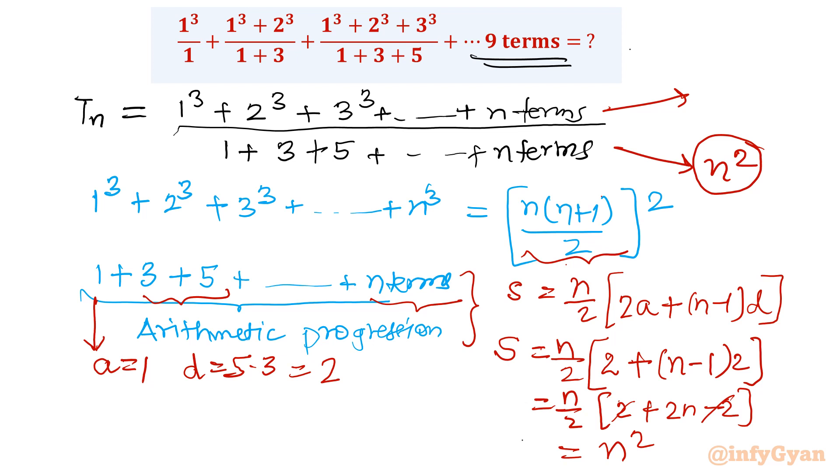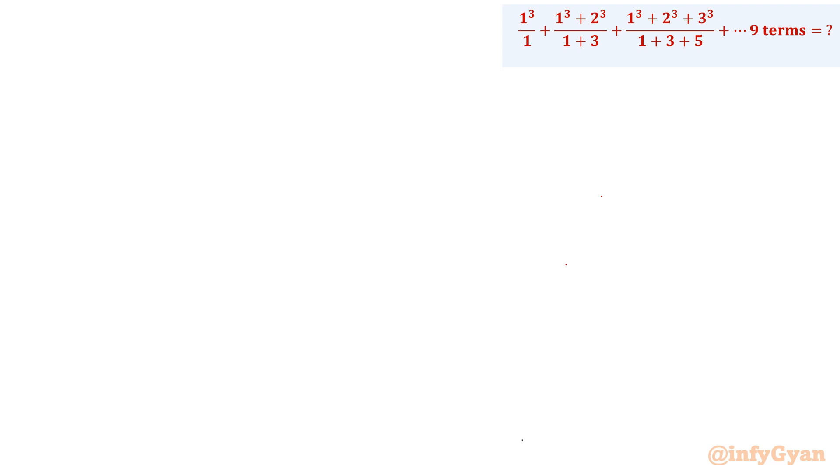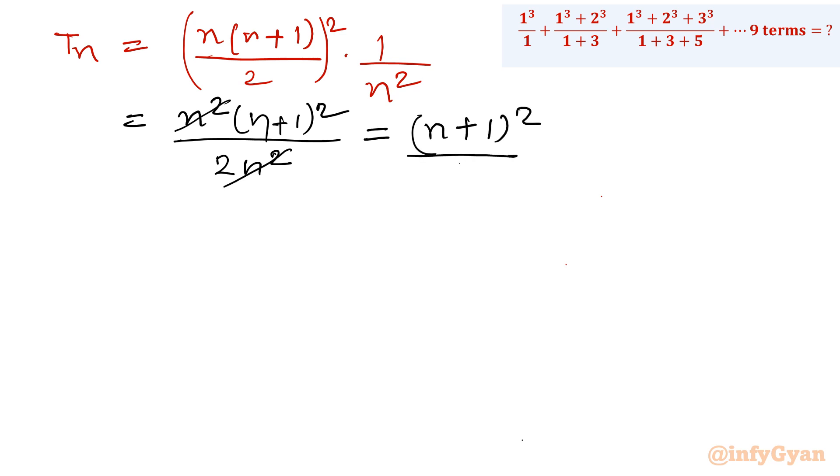Your numerator is this one, n times n plus 1 over 2 whole square. So let's put the value. I will write Tn is equal to n times n plus 1 over 2 whole square, and our denominator is n square. Now if you will simplify this, let me expand, open this square. So I will be having n square times n plus 1 whole square over 4n square. So I can cancel this n square. What is left is n plus 1 whole square divided by 4.